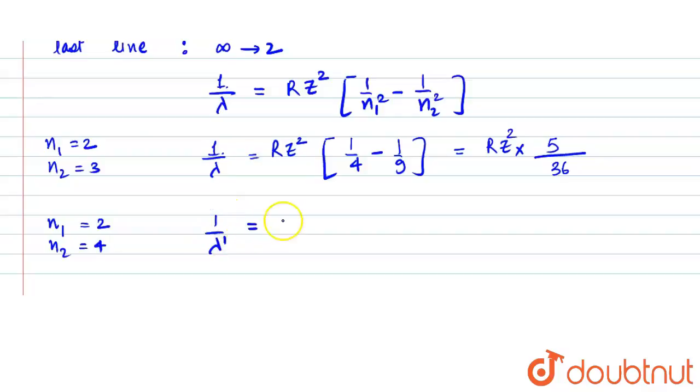In this case, the wavelength would be 1/λ' = Rz²[1/4 - 1/16]. This becomes Rz² times 3/16.